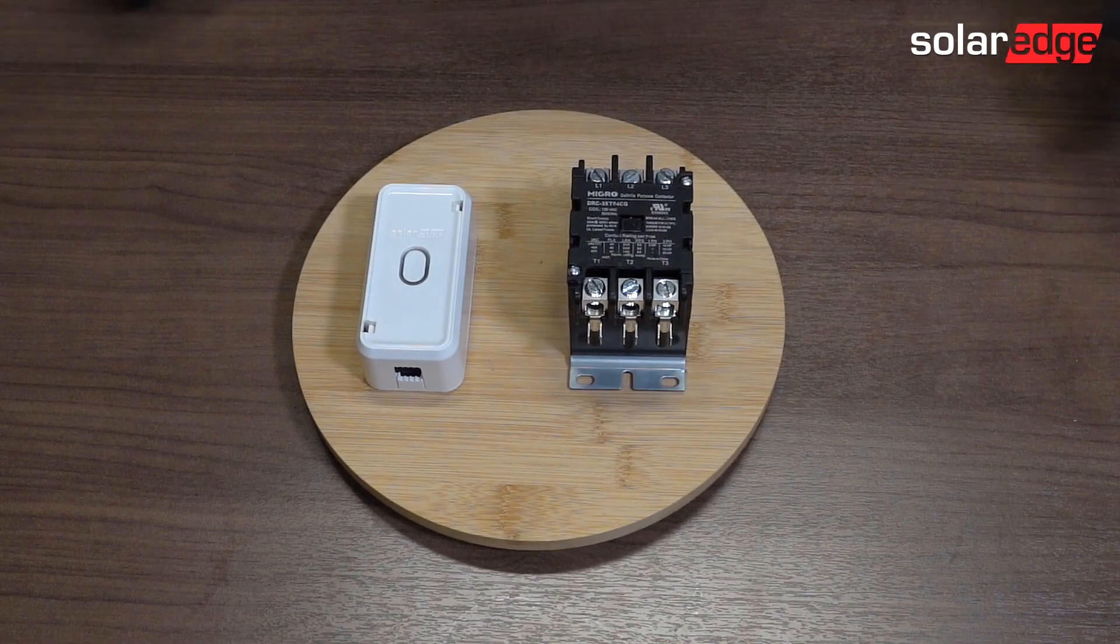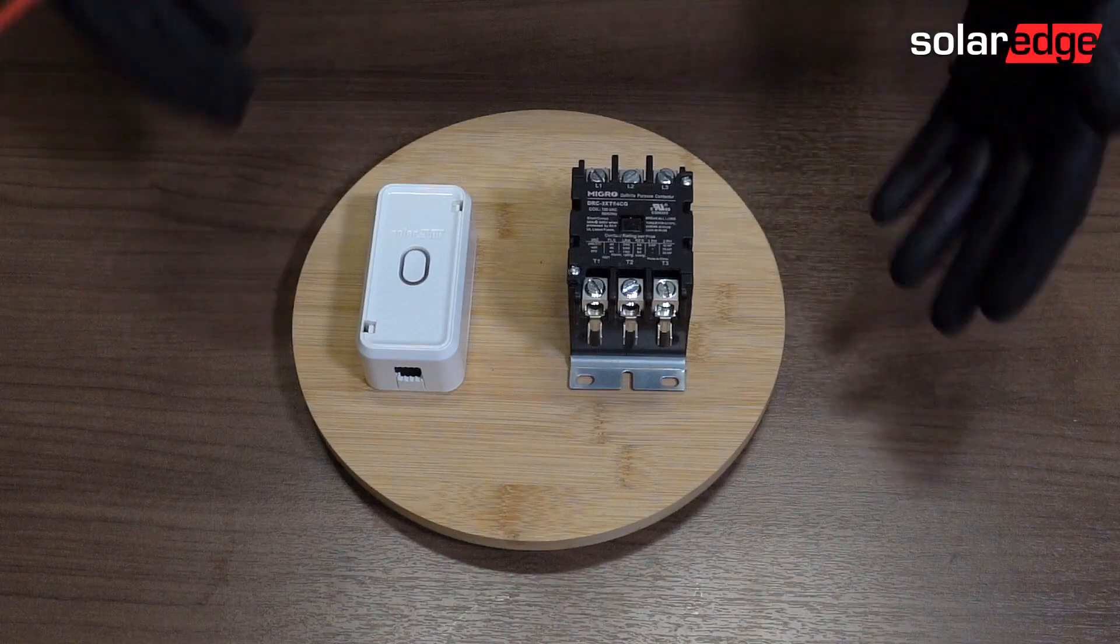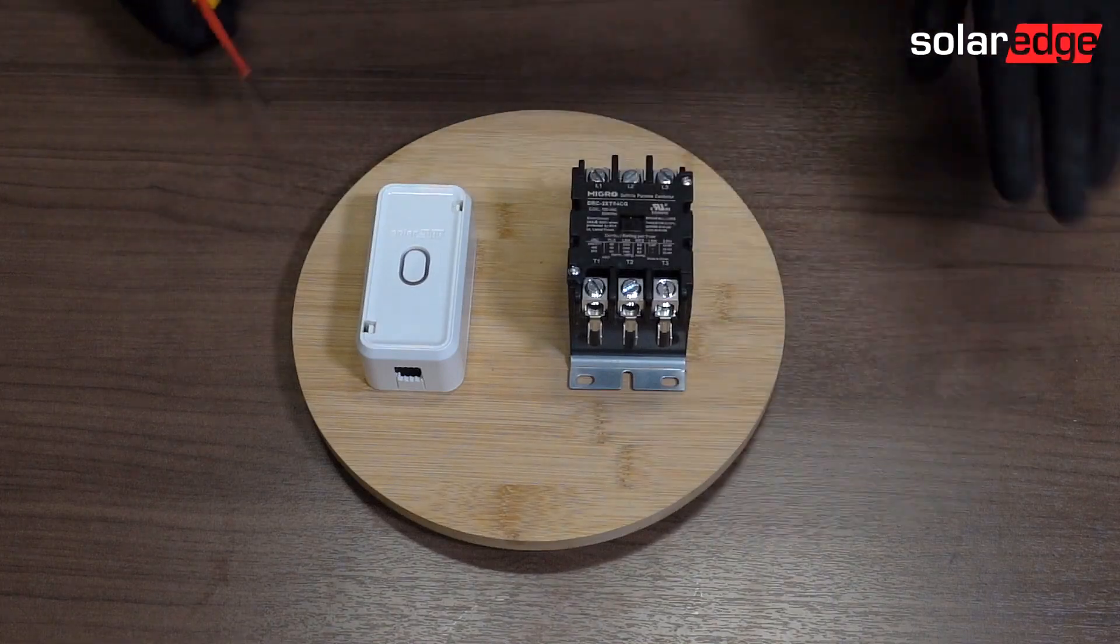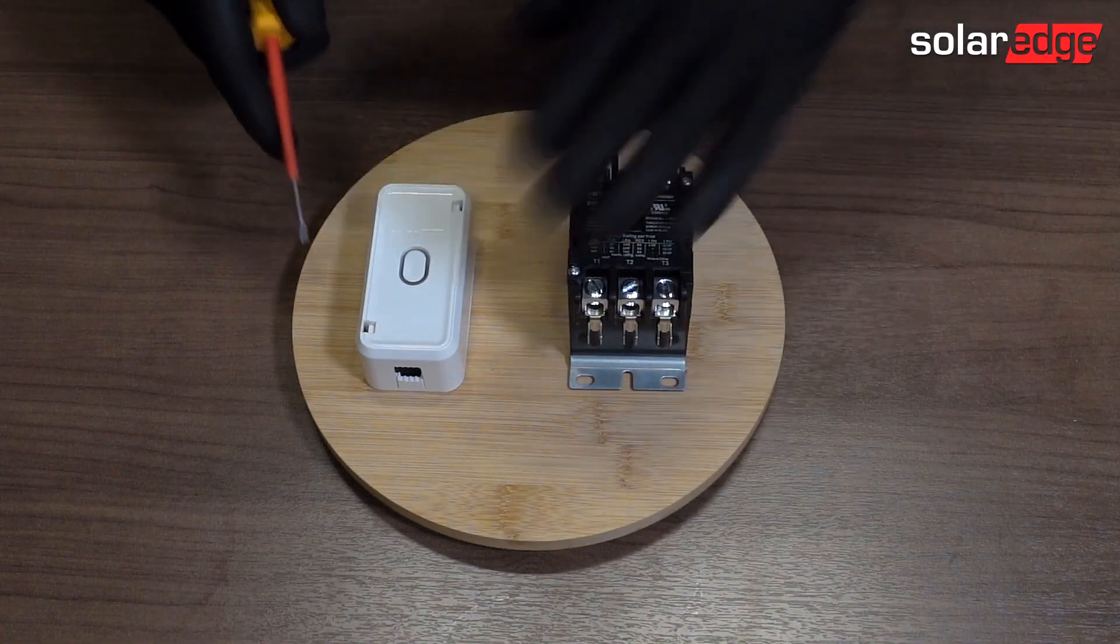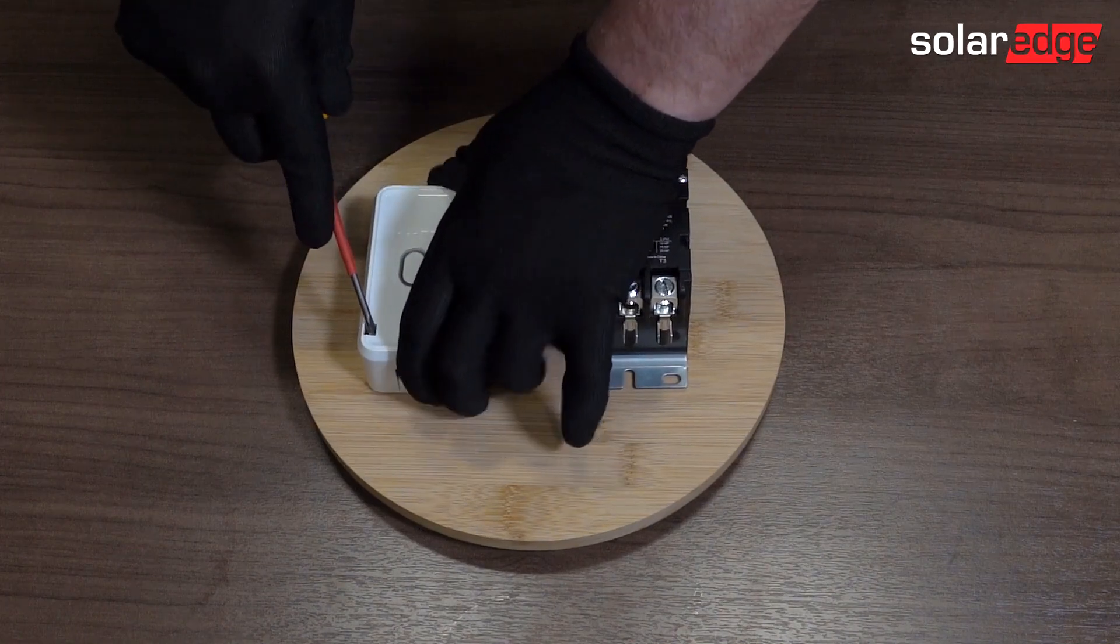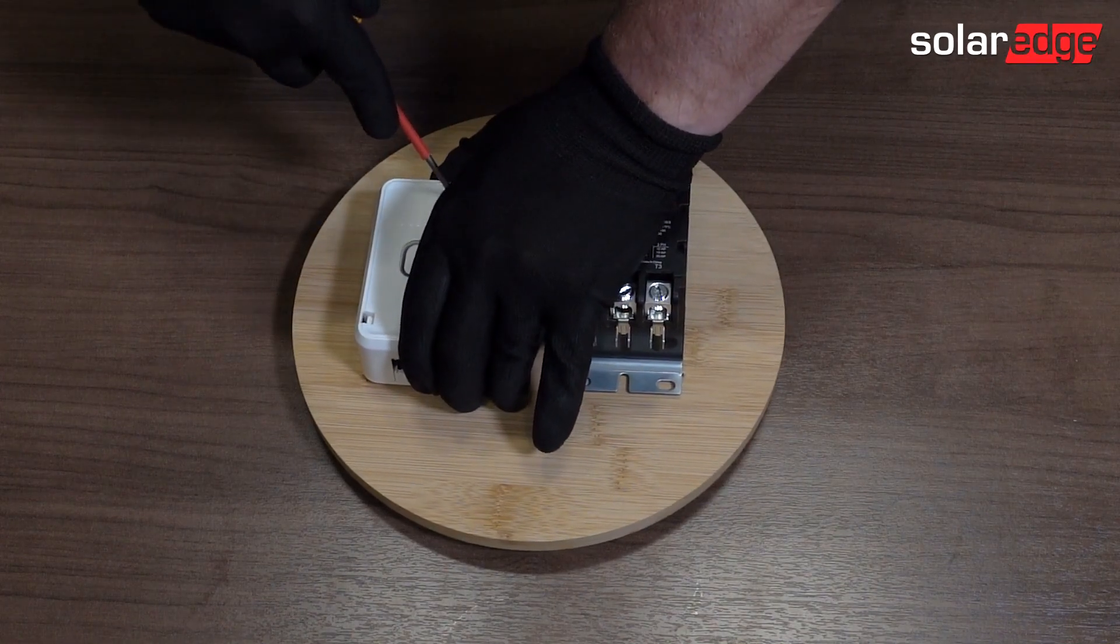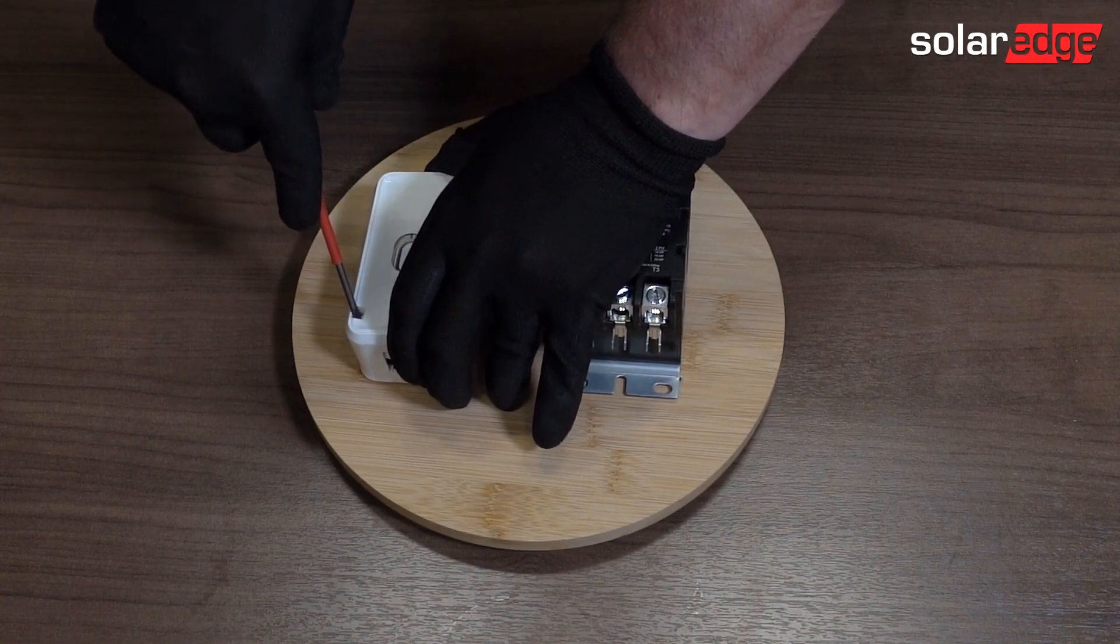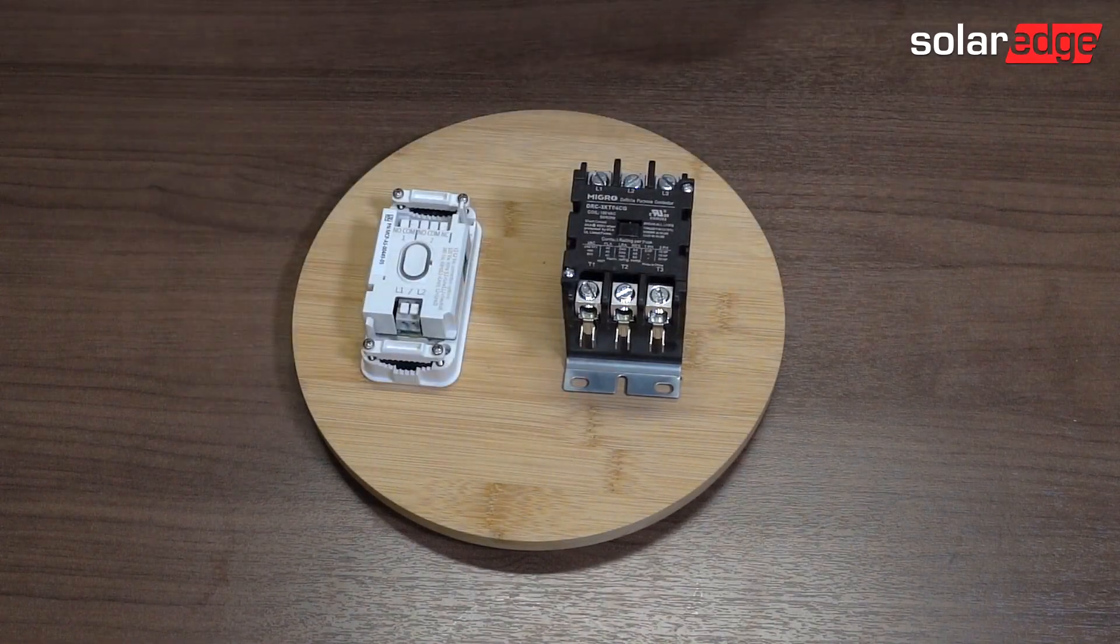So first things first, when we get our load controller mounted into the box and our contactor mounted into the box, we are going to open up our load controller by using our screwdriver to open up these tabs and then lifting gently up on the cover of the load controller.